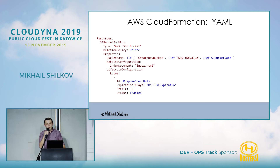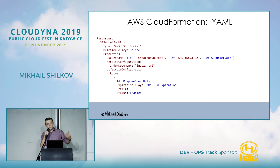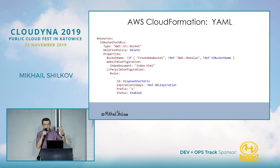CloudFormation is comparable. They started with JSON, but these days YAML is mostly used. It's more or less the same — you define a collection of resources, send it to AWS, and it applies them.